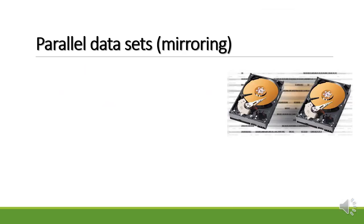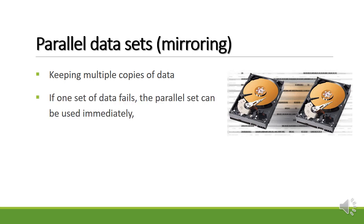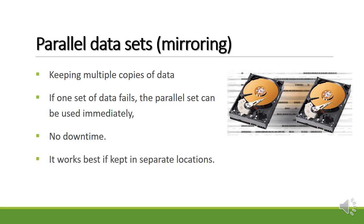Parallel data sets — another word for this is mirroring the data. It's when we keep multiple copies of data. Then, if one set of the data fails, the parallel set can be used immediately. There's no downtime, and it works best if the copies are kept in separate locations. If they're in the same location and a disaster happens, it's not going to help.